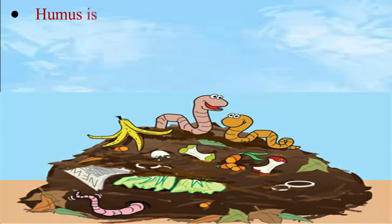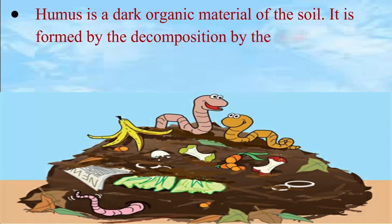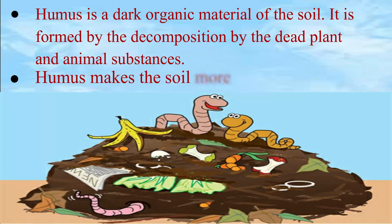Humus is a dark organic material of the soil. It is formed by the decomposition of dead plant and animal substances. Humus is a plant or animal matter, and it makes the soil fertile.